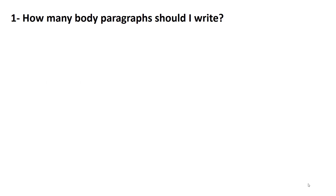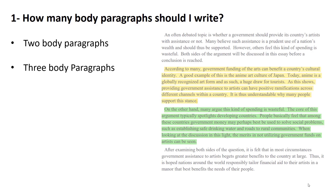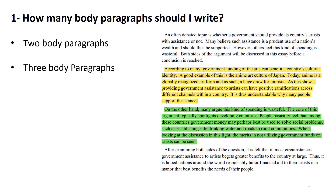How many body paragraphs should I write? This is an academic essay that should have around 4 to 5 paragraphs, which means that you should write 2 to 3 body paragraphs. But you might ask, when should I write 2 body paragraphs or 3 body paragraphs? It depends on your thesis statement. The thesis statement is the last sentence you write in your introduction, and it should have the points you are going to discuss in your body paragraphs. If you have 2 points, you write them in 2 body paragraphs, and if you have 3 points, you write them in 3 body paragraphs. The number of body paragraphs depends on your thesis statement.